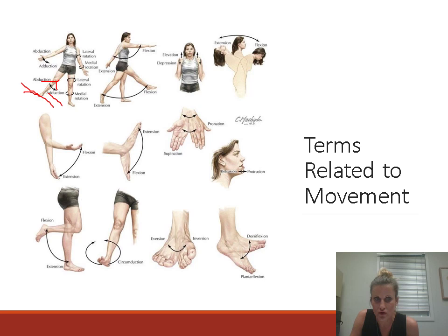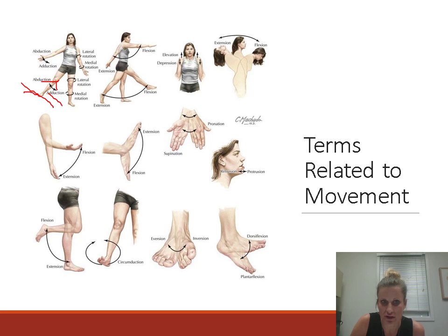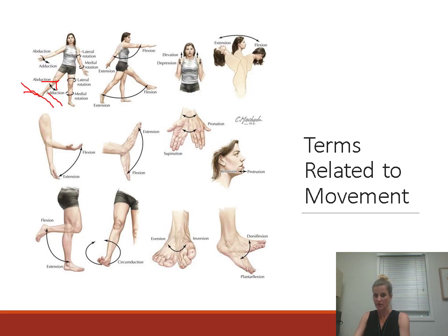Rotation is literally rotating — one bone twists or rotates on the other. We have lateral and medial rotation of the shoulder, and also lateral and medial rotation of the lower arm. Remember the head of the radius rotates on the capitulum of the humerus, so you can have lateral and medial rotation of the forearm and hand. Here you see lateral and medial rotation of the leg at the hip: twisting the leg outward is lateral rotation, back inward is medial rotation.